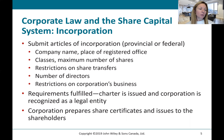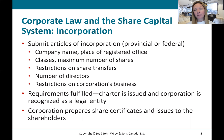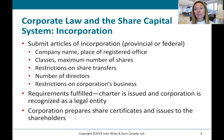To fulfill these requirements, the Articles of Incorporation need to specify such things as the company name, the place of registered office, the classes and the maximum number of shares that can be issued, any restrictions on share transfers, the number of directors, and restrictions on the corporation's business. Only once all these pieces of information have been submitted will the corporate charter be issued. At that point, the corporation will prepare share certificates and begin issuing those to shareholders.